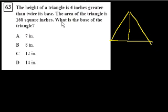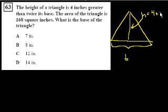This is the base, let's call that b. So then the height is 4 inches greater than twice its base, so h = 4 + 2b. The area of the triangle is 168 square inches. What is the base of the triangle?